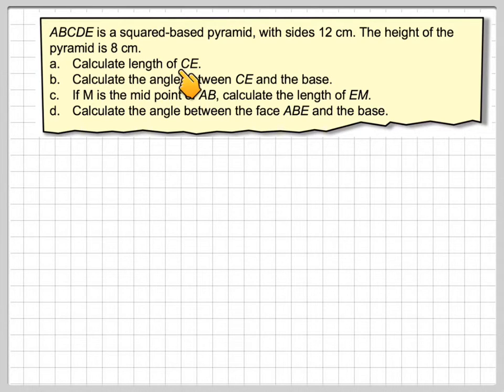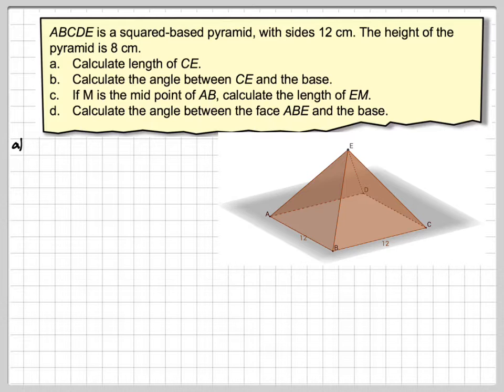Part A: Calculate the length of CE. Let's just put it in the diagram for the moment. So here's our pyramid: A, B, C, D, height E.